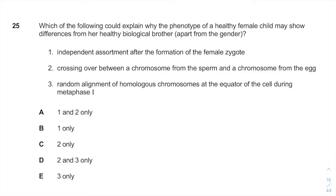First of all, you should know that the difference between the two siblings occurs due to the fact that when spermatogenesis and oogenesis occurs in the father and the mother accordingly, crossing over and independent assortment takes place before the formation of the zygote. And therefore, you will have different alleles for the different zygotes that can occur in the future.